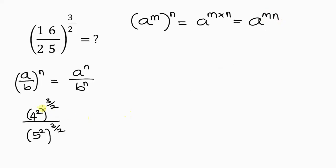Let's apply the same logic here. This can be 4 to the power of 2 times 3 over 2, all over 5 to the power of 2 times 3 over 2. As we multiply, this 2 here cancels out this 2, so we are left with 4 to the power of 3 all over 5 to the power of 3.